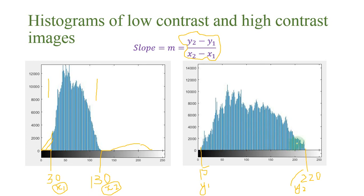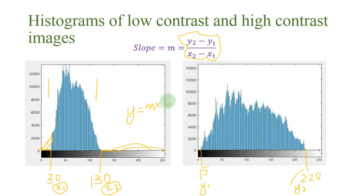The more the image is stretched, the better will be its contrast. If we bring gray level 30 to 0 and stretch gray level 130 to 250, the histogram will be stretched. The points in between 0 and 250 are calculated using the equation of a straight line: y equals mx plus c. So contrast stretching or improving the contrast of an image is all about stretching the histogram.